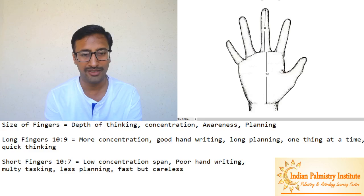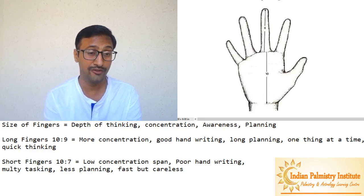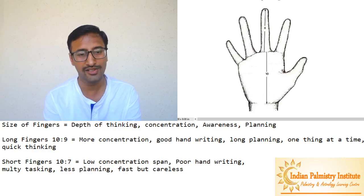But if you fall in the category of normal ratio, 10 is to 8, then you have good blend of both qualities. Your concentration span, planning, thinking is appropriate.